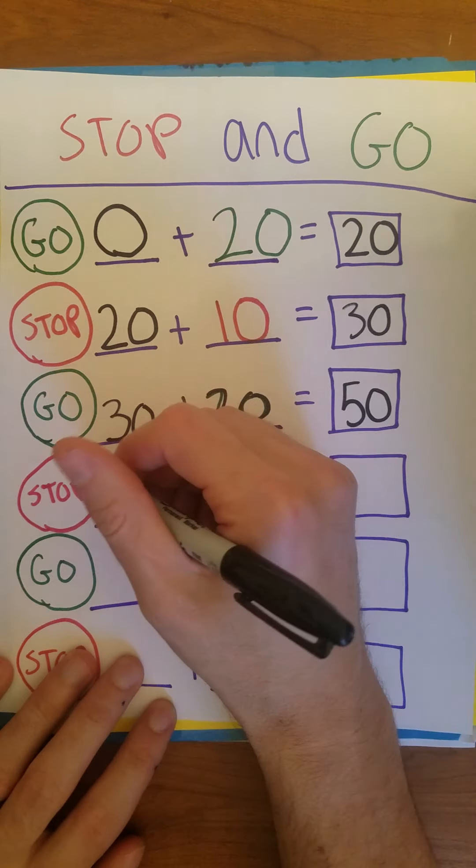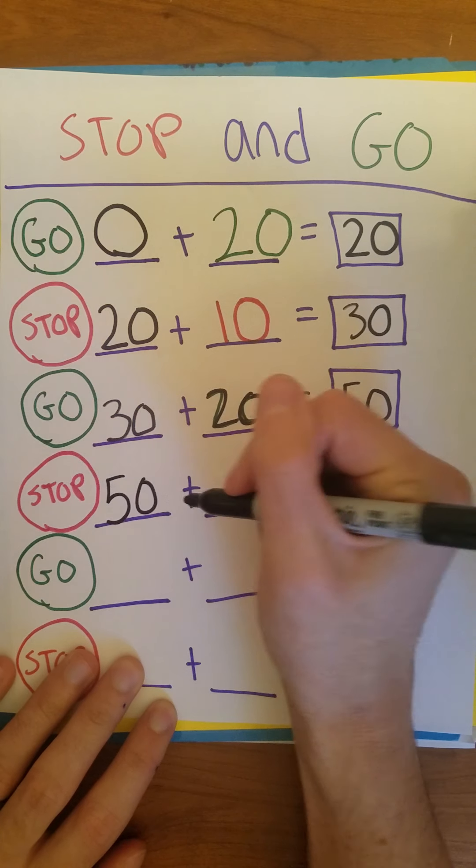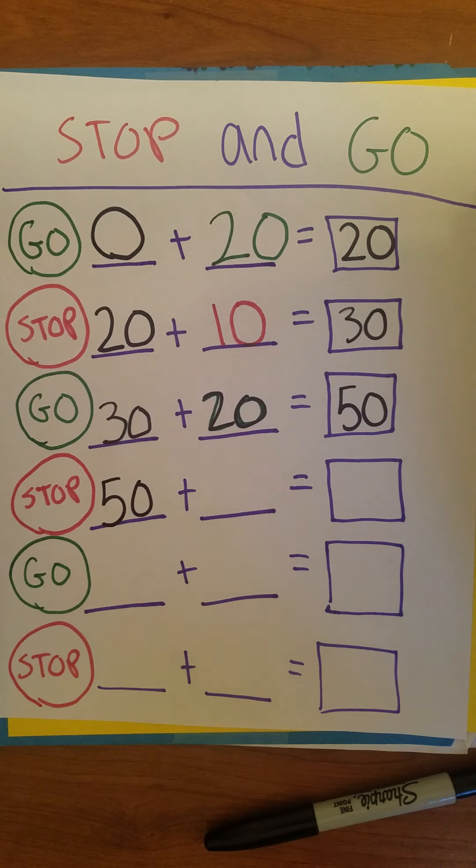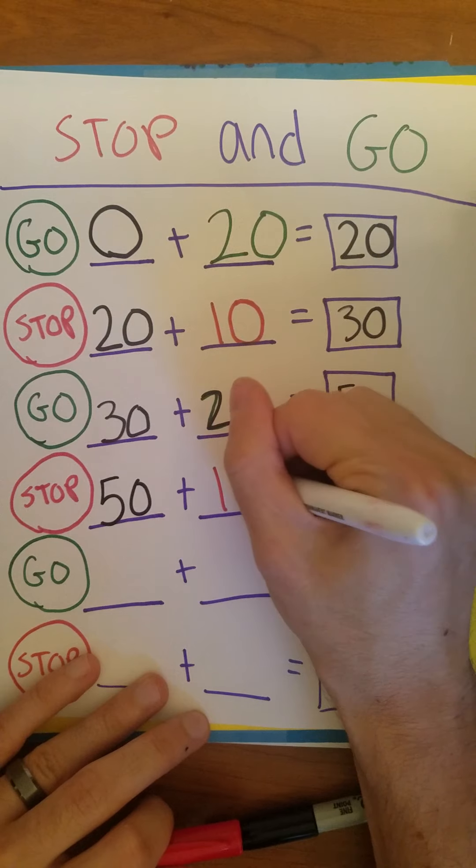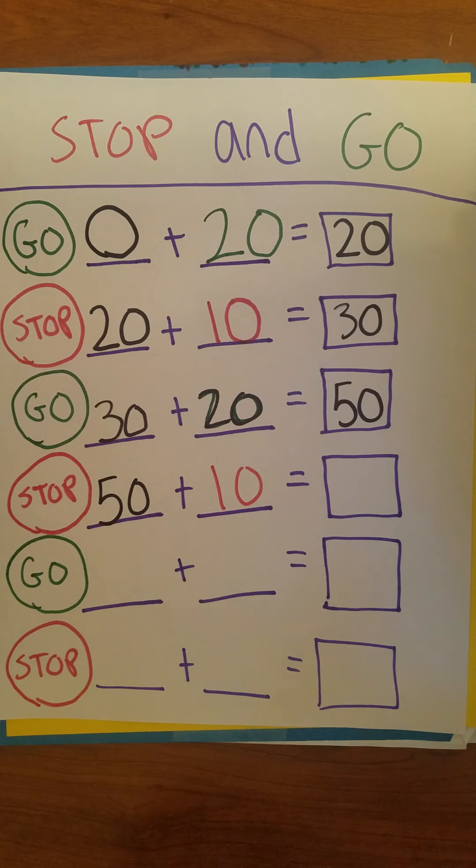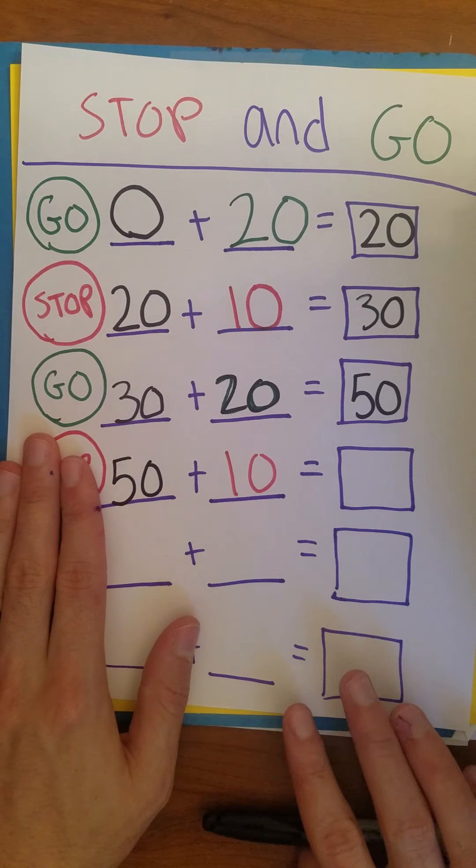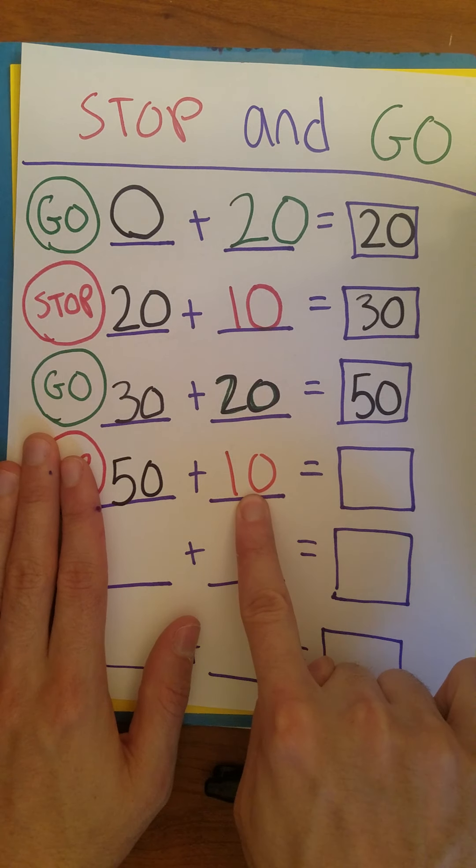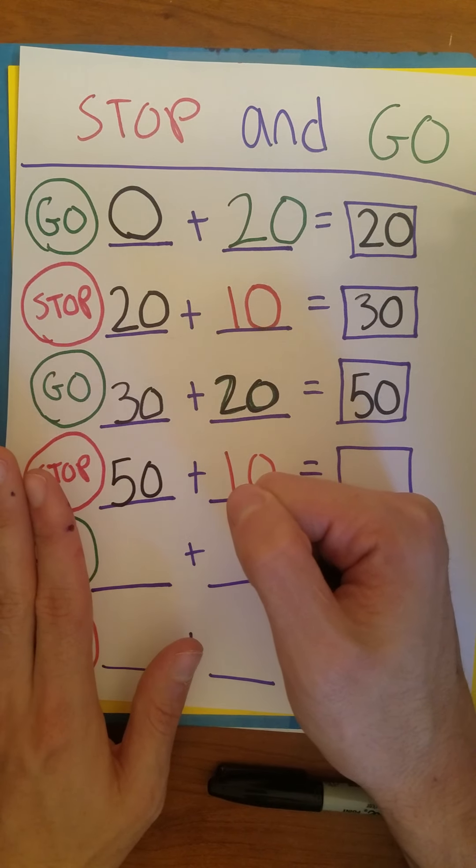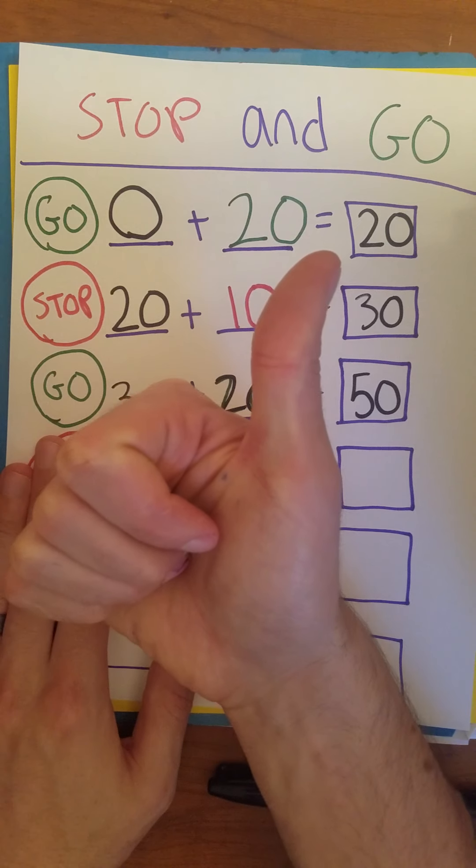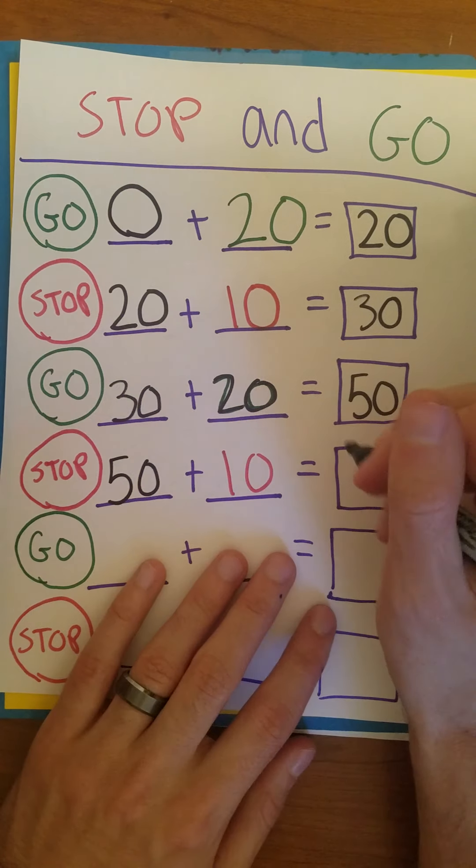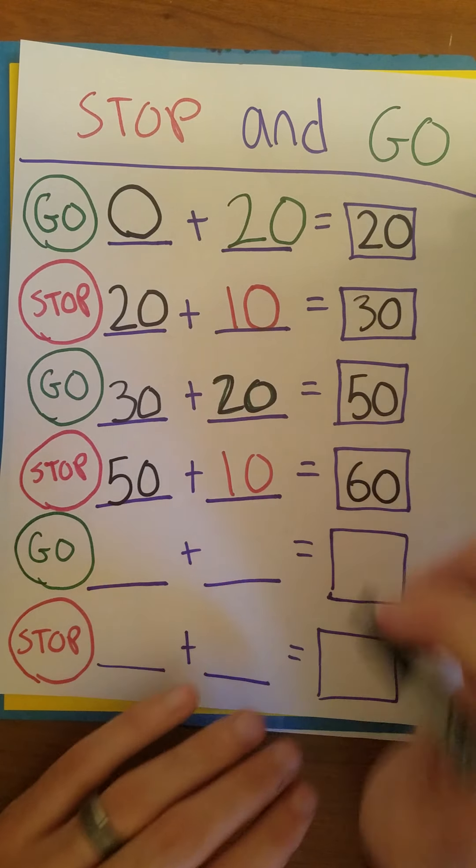We're still going 50 miles an hour, adding 10. Adding 10, just need to skip count by 10 one more time. 10, 20, 30, 40, 50, 60. So 50 plus 10 equals 60.